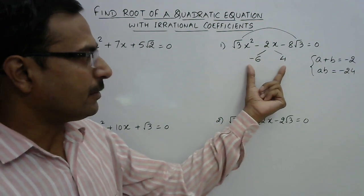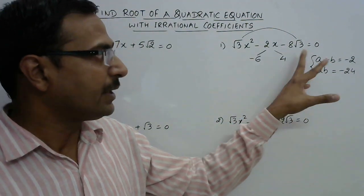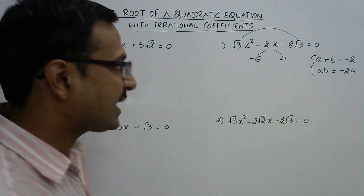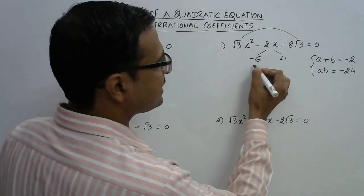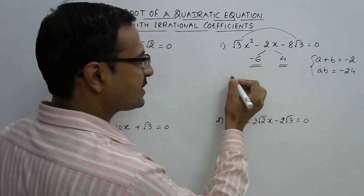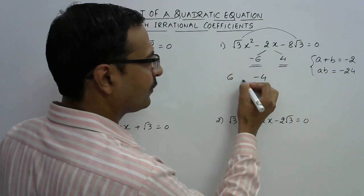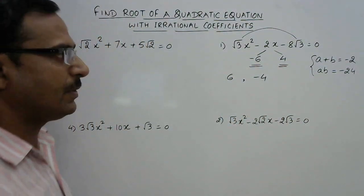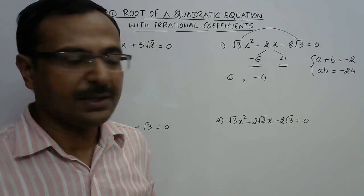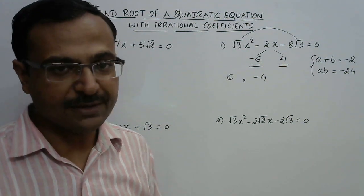Once you split the middle term using the sum and product of these two factors, the second step is to change the sign of these two numbers. So -6 becomes +6 and +4 becomes -4. The first step was to split the middle term; the second step is to change the sign of the two factors found in step one.